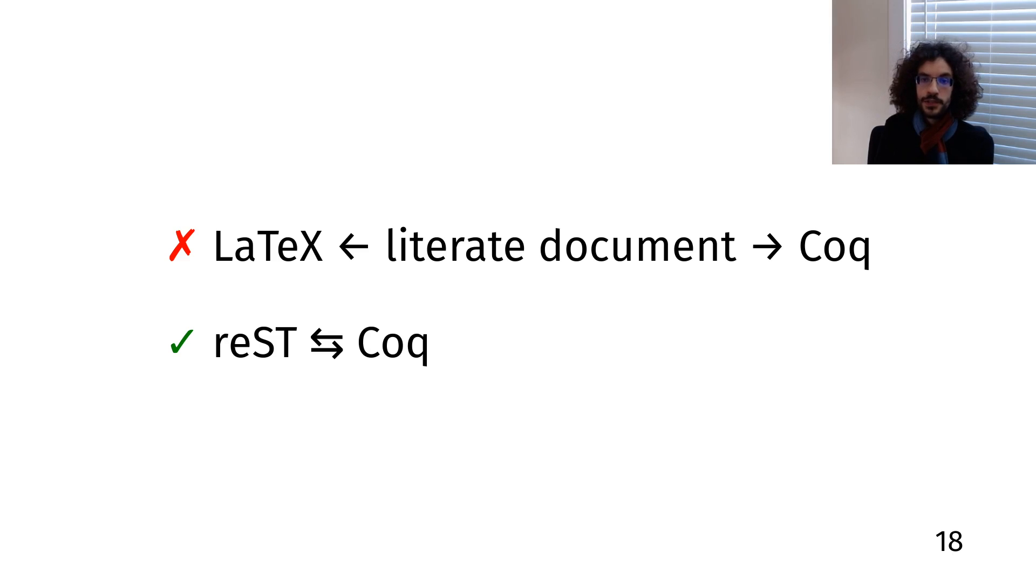So that's precisely what Alectryon provides. It gives you bi-directional editing, which allows you to toggle between code and prose seamlessly, so you're free to use the most appropriate editing environment at all times. Importantly, there's no preferred view of a document. You can pick either the reStructuredText view or the Coq view as the one you store and distribute.